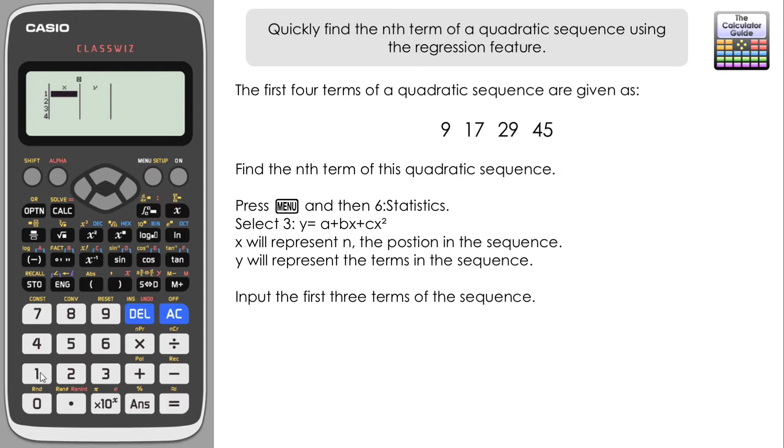I'm just going to order these one, two, and three for first term, second term, third term, and y is going to represent the terms in the sequence themselves. So in this case we've got 9, which is the first term, 17, which is the second term, and 29, which is the third term.